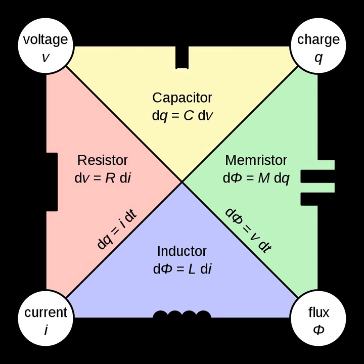Multiport elements have more than two terminals. They connect to the external circuit through multiple pairs of terminals called ports. For example, a transformer with three separate windings has six terminals and could be idealized as a three-port element. The ends of each winding are connected to a pair of terminals which represent a port. Two-port elements are the most common multiport elements, which have four terminals consisting of two ports.